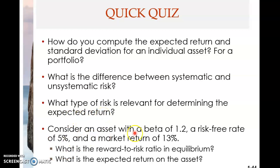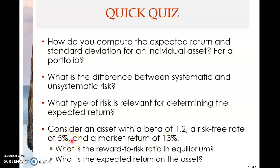For systematic risk, no matter how much you diversify, it does not go away. Therefore investors need to be compensated for it — only systematic risk is relevant for determining the required rate of return. Now consider an example with a beta of 1.2, a risk-free rate of 5%, and a market return of 13%. The reward-to-risk ratio is always the market return minus the risk-free rate: 13 minus 5 equals 8, divided by the market beta of 1, giving 8.